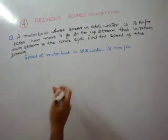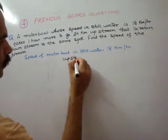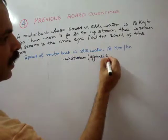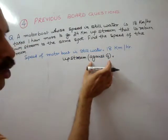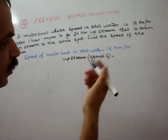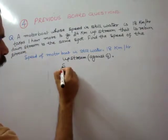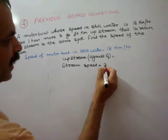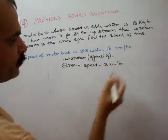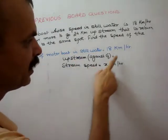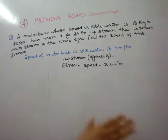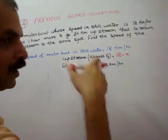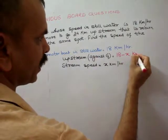If it is upstream, then it is against gravity, so speed will decrease. So we will take the speed of the stream as x — suppose x kilometers per hour. So in the stream, our upstream speed will be 18 minus x. The stream speed gets subtracted, so this is our upstream speed.